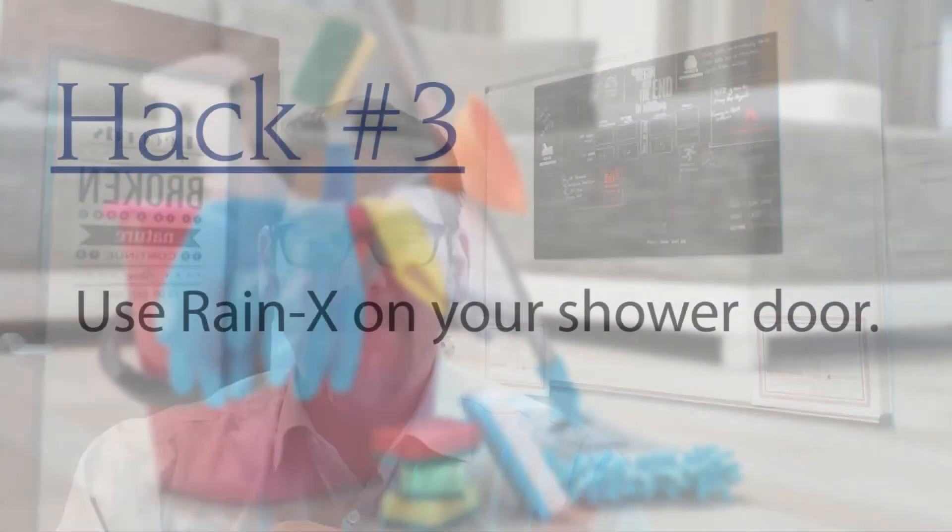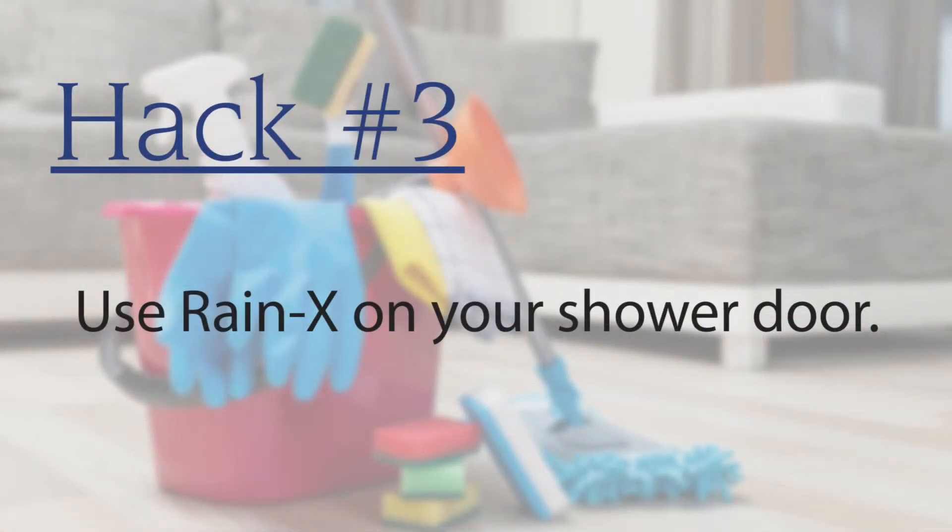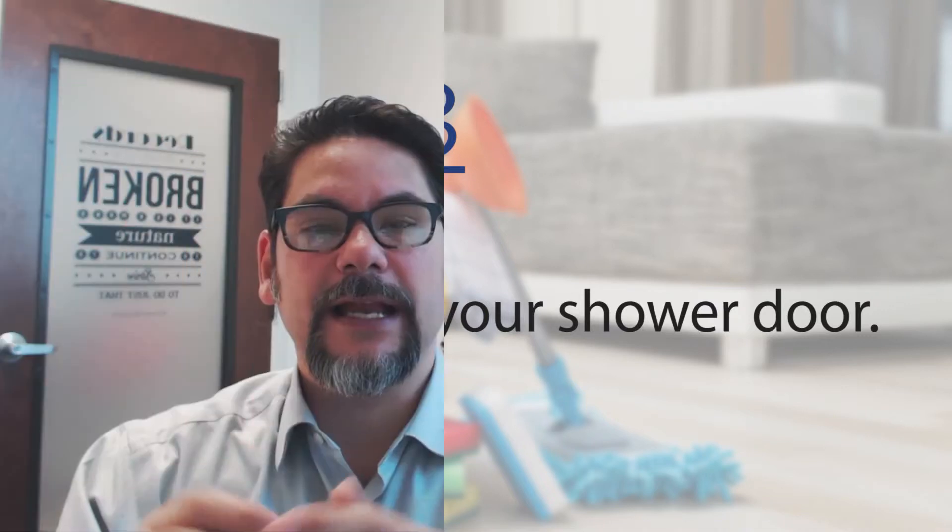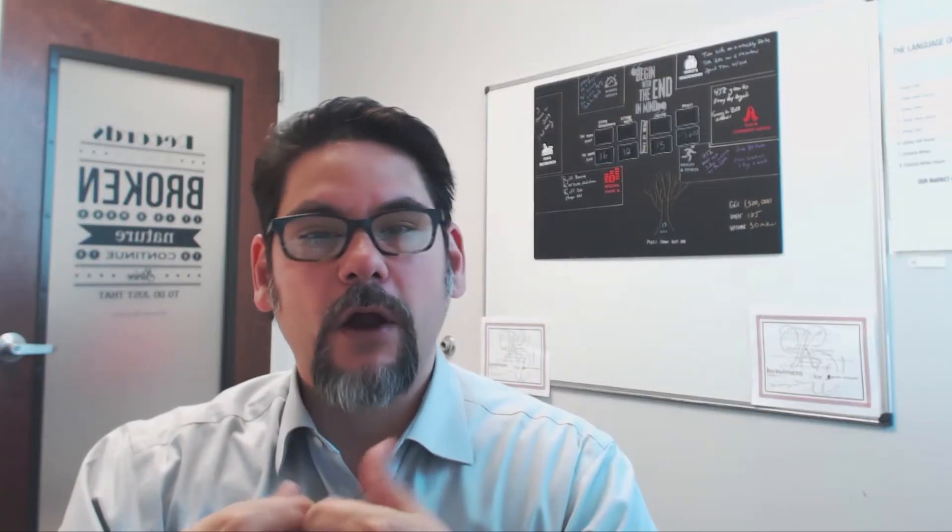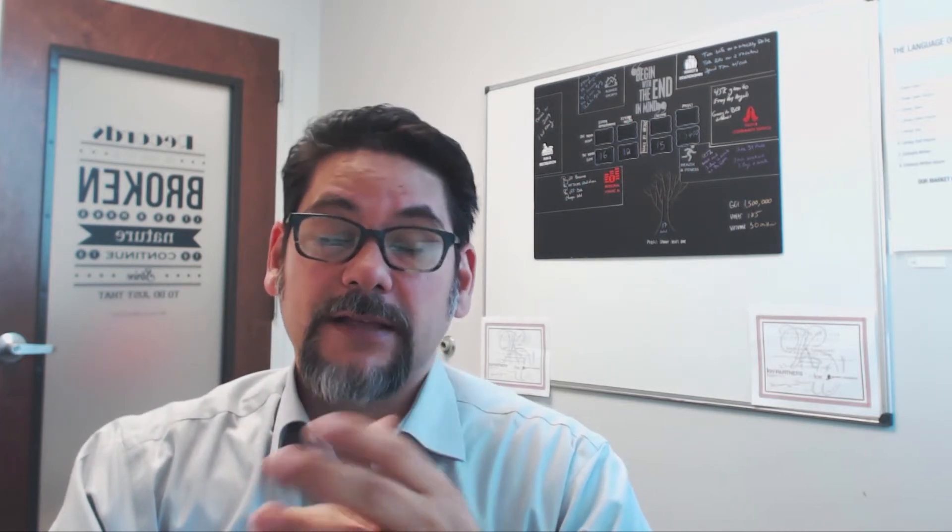Number three is about your shower door. The glass doors get dirty. If you've seen the product Rain-X, spray some of that on there and ventilate your bathroom when you do it, then dry that off. When it's clean, as you use the shower, water will bead off of it. You can apply Rain-X about every three months or so, depending on how often the shower is used, and it will keep that clean for you.